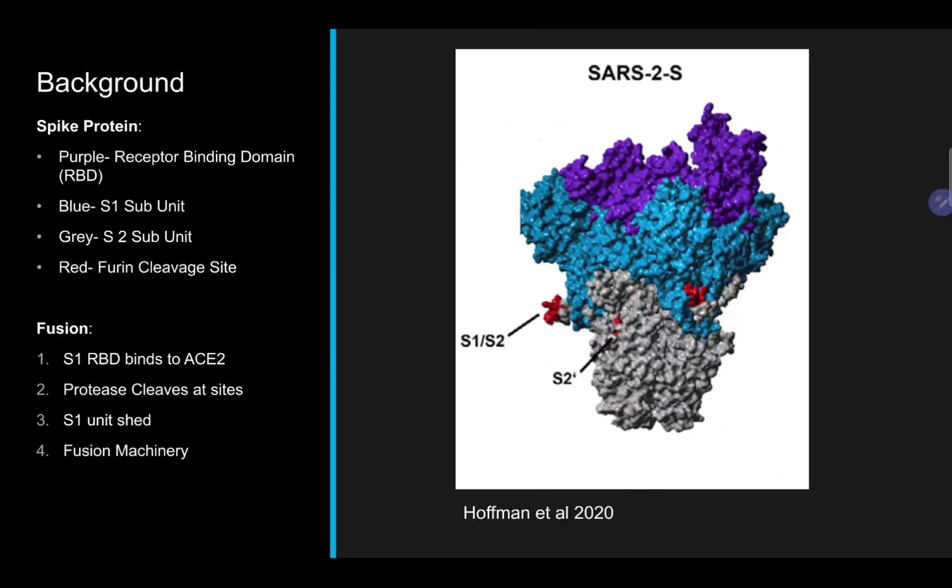To underline just how important this is, any inhibition of the furin cleavage site will result in massively less infectivity. Clearly, this site is of major importance, but in many proteins and viruses, there are lots of critically important parts.